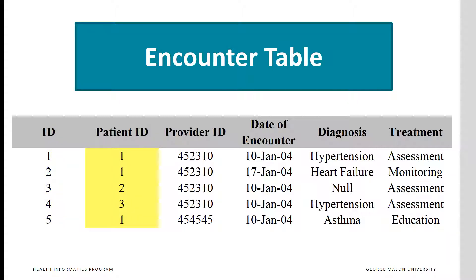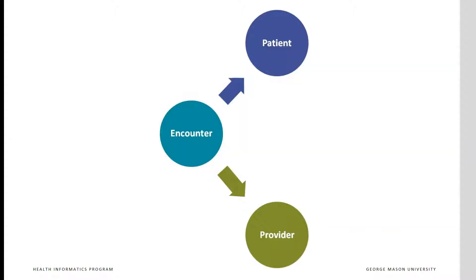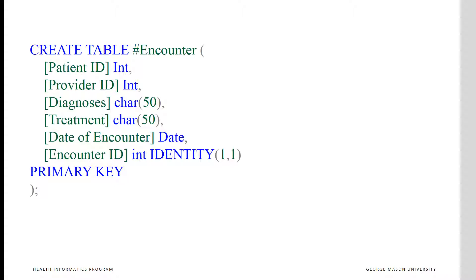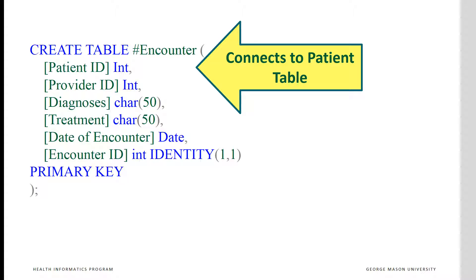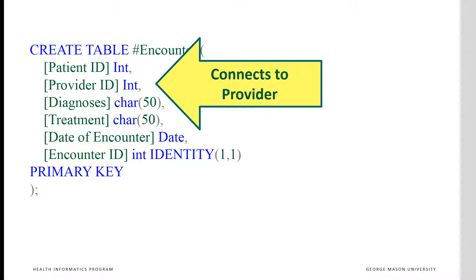Patient ID is a foreign key in the encounter table. It can be duplicated, as when the same patient has multiple visits. Provider ID is also a foreign key in the encounter table, but a primary key in the provider table. This key connects the encounter to the provider table, and it can have duplicates as when the same provider sees different patients. The encounter table connects visits to both the patient and provider tables. The patient and encounter table share a field, and that's why the two are connected. The provider and encounter table share a field, and that's why they are connected.